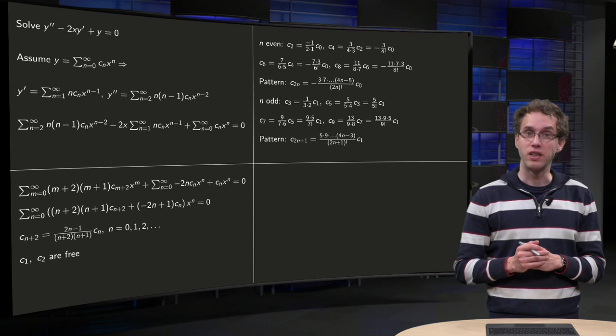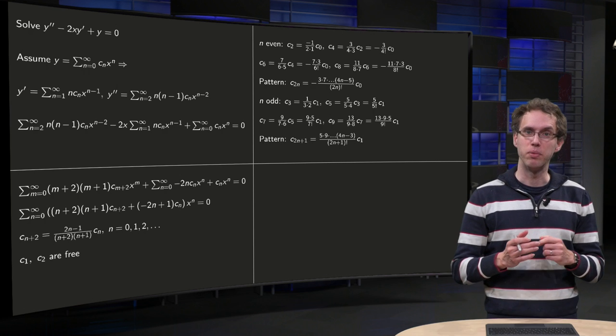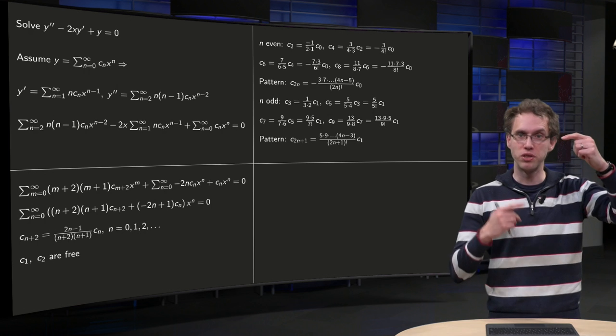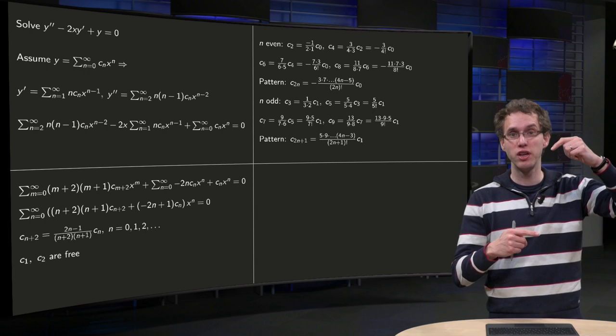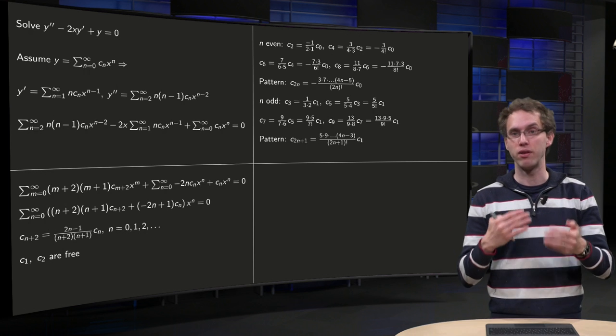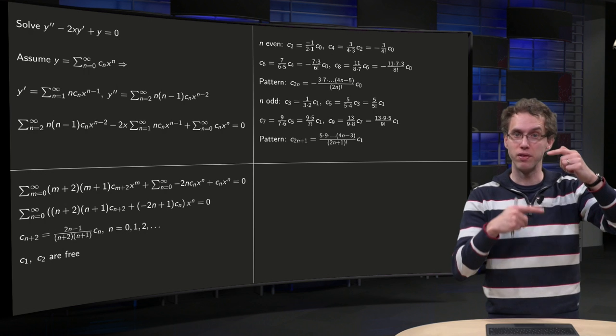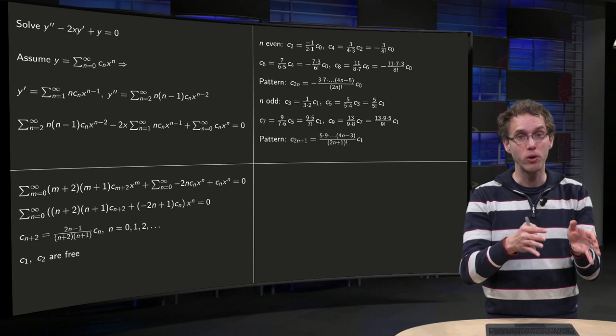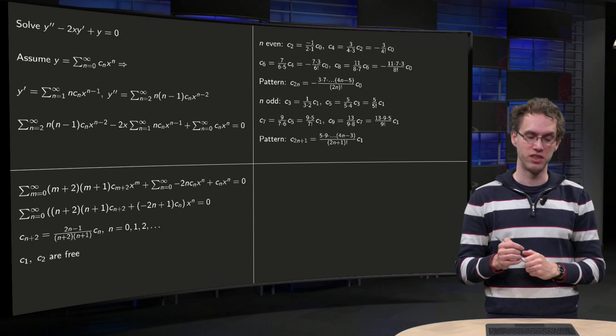Well, the relation looks again a bit awkward, but you see we again have this two-step relation. c2 is given in terms of c0, c4 in terms of c2, c6 in terms of c4, and for the others as well. c3 given in terms of c1, c5 in terms of c3, etc. So we can again do the odd coefficients and the even coefficients separately.